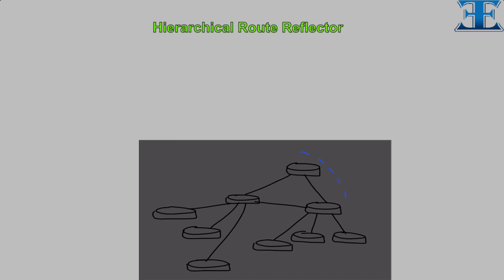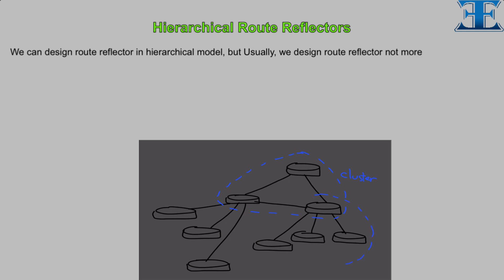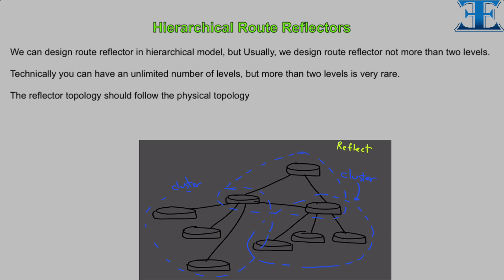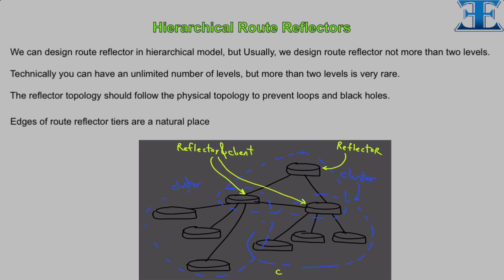We can design route reflectors in a hierarchical model, but usually we design route reflectors no more than two levels. Technically you can have an unlimited number of levels, but more than two levels is very rare. The reflector topology should follow the physical topology to prevent loops and black holes. Edges of route reflector tiers are a natural place to reduce routing information being carried in the lower tiers.